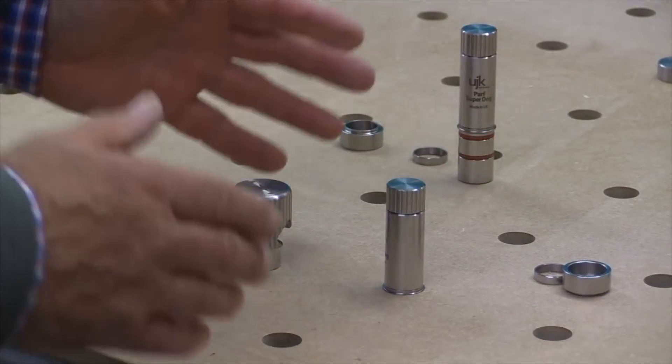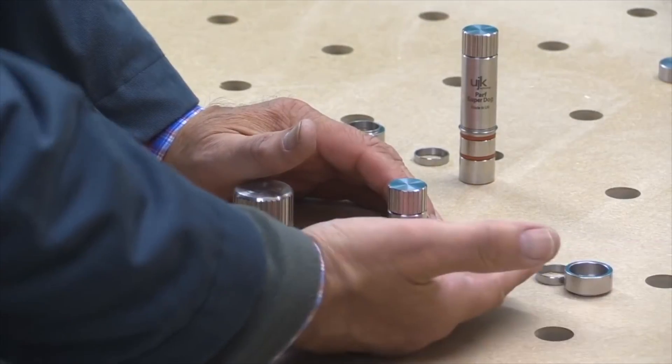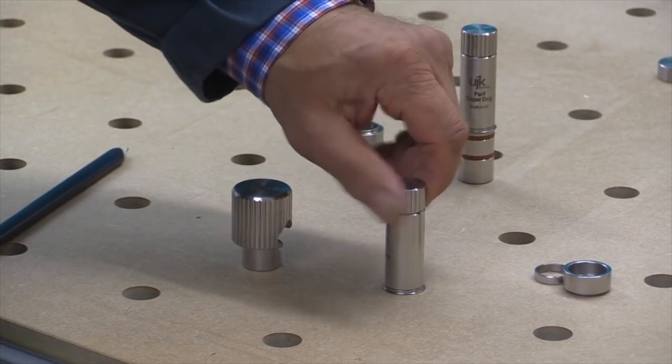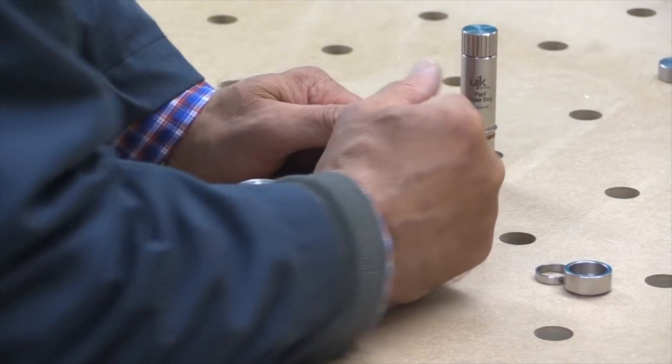And this again is perfect if you're doing jig work or if you're using your track saw with the guide rail. And to remove it loosen off the locking knob and then lift.